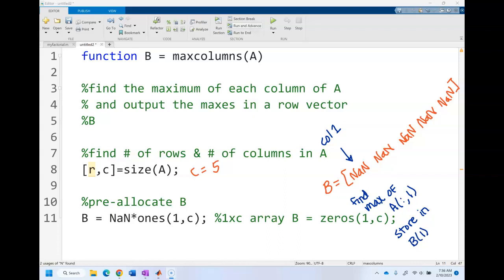Before we even write our loop, let's just code it for the first one and then we'll try to figure out how we're going to make this repeat. We're going to find the maximum of the first column of A and store that in the first index of B.